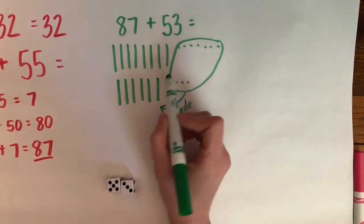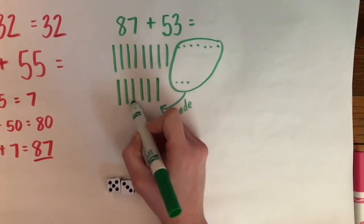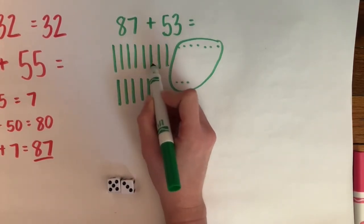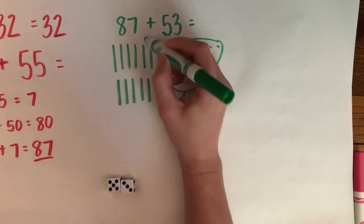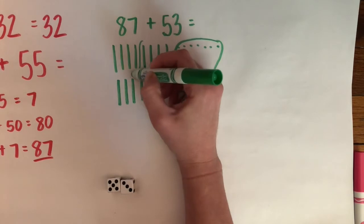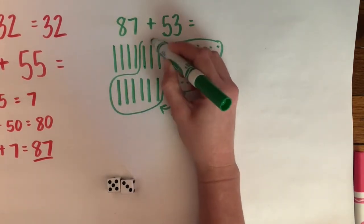So now let's count our tens. We have 10, 20, 30, 40, 50, 60, 70, 80, 90, 100. So I know that I have 100 here.